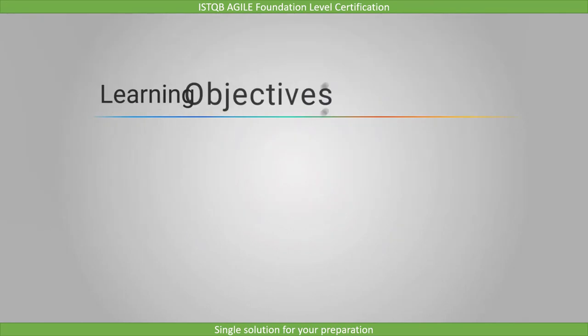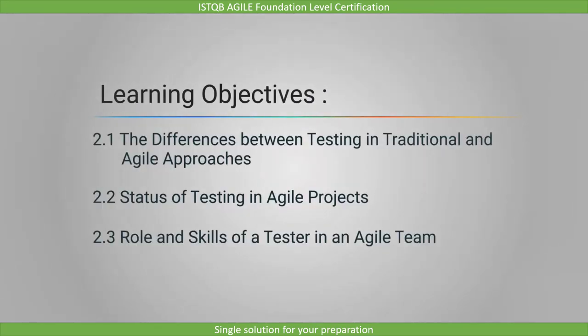Along with the keywords, there are three learning objectives of this chapter. First, we will cover the differences between testing in traditional and agile approaches. Second, we will see how development and testing activities are integrated in agile projects. And third, we will describe the role of independent testing in agile projects.